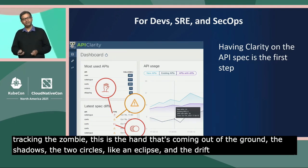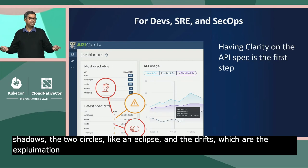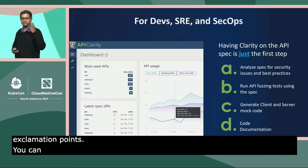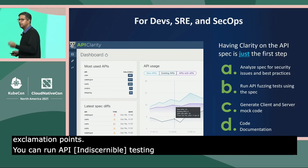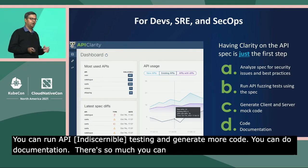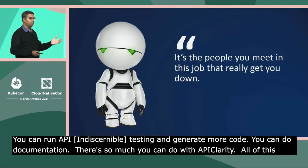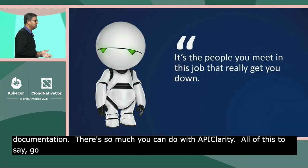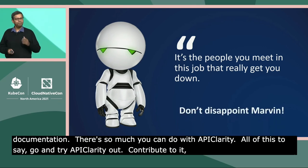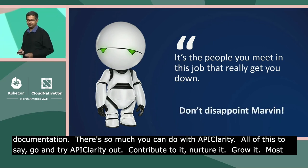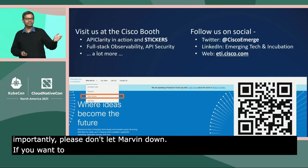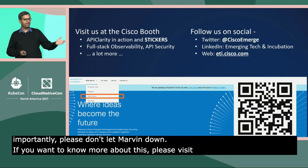Having this clarity is just the first step — you can take this in so many different ways. You can run API-first testing, generate mock code, do documentation. There's so much you can do with API Clarity. So go and try API Clarity out, contribute to it, nurture it, grow it. Most importantly, please don't let Marvin down. If you want to know more about this, please visit us at the Cisco booth, where we have API Clarity in motion.